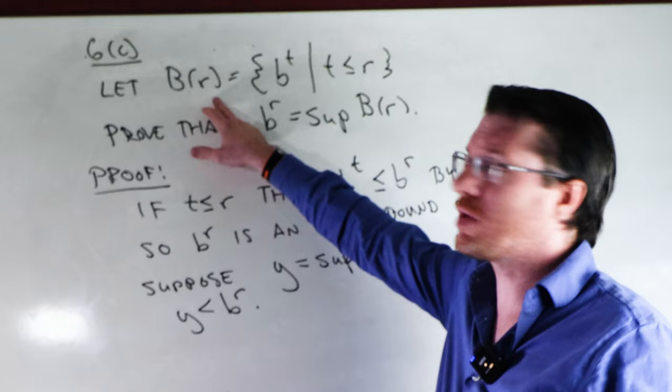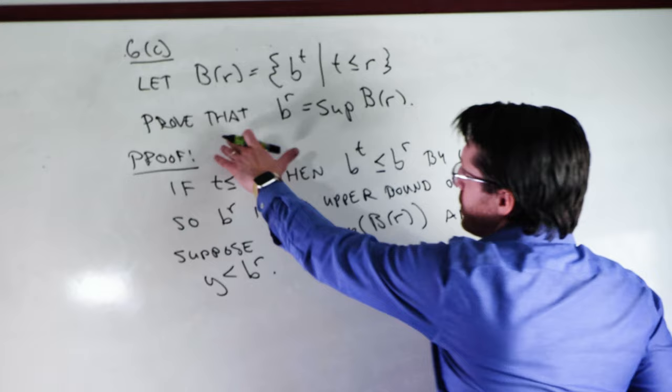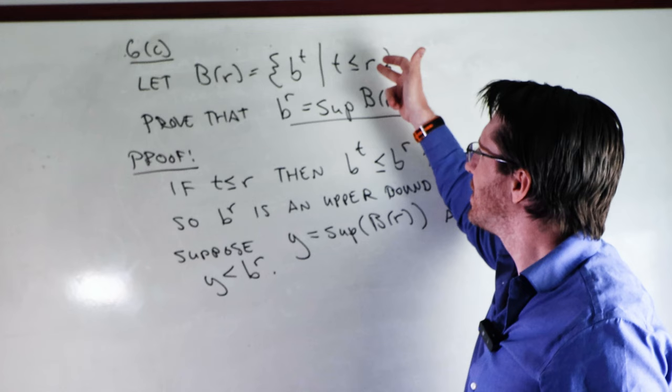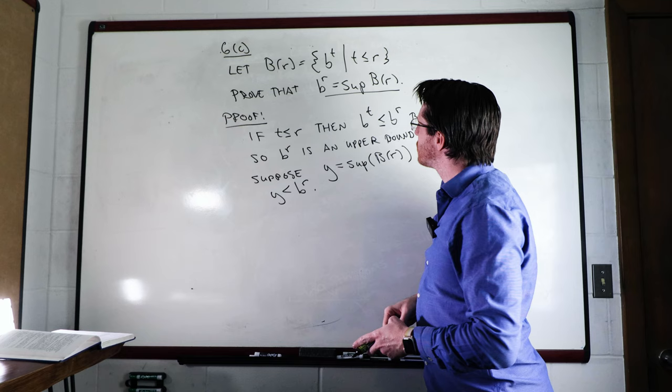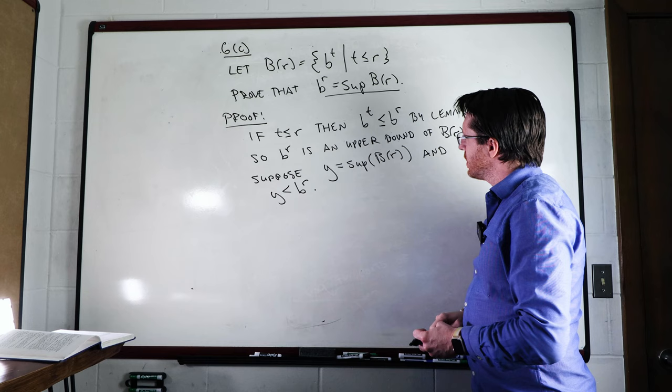If we take a look, we have the set BR that we talked about earlier where we have B raised to T and T being less than R. So it's a collection of all rational powers of B where those rational powers are less than R. And so what we're going to do is we're going to prove that B to the R is exactly the least upper bound of this set. It should be. I mean, morally, if you just look at this, the biggest number here is R and so B to the R should be that. So what we're going to do is we're going to say that if we have T being less than or equal to R, then we get B to the T is less than or equal to B to the R by the lemma. B to the R is an upper bound of BR.